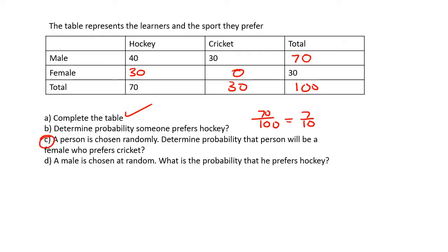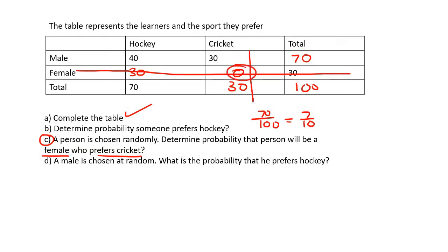For this question, a person is chosen randomly. Determine the probability that a person will be a female who loves cricket. So we go to female, and they love cricket — where those two intersect, it's zero. So we're going to say zero out of 100 people, and that gives you zero.